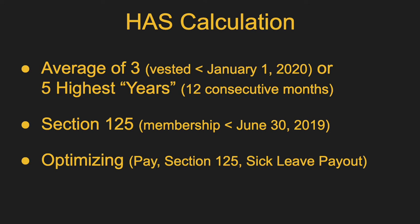This is true for most pension systems: you want to think about optimizing your pay during those three or five years, because that is what your benefit is based on. That could include making sure you're as far advanced as you can on the salary schedule in terms of education level, moving up to administration if you've been a teacher, or taking on extra duties like coaching, activities, or taking tickets at the soccer game. All of those will boost your pay and give you extra money during those years, and then extra money for the rest of your life through your benefit. Make sure you stop doing Section 125 if your membership was before June 30th, 2019.